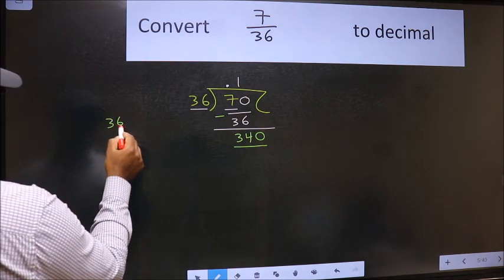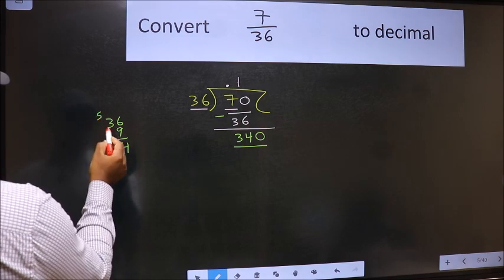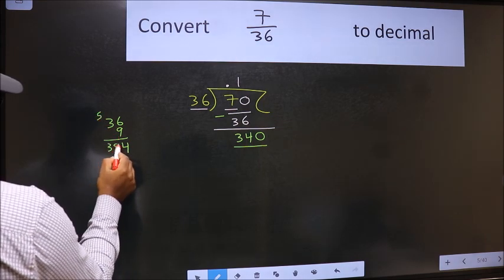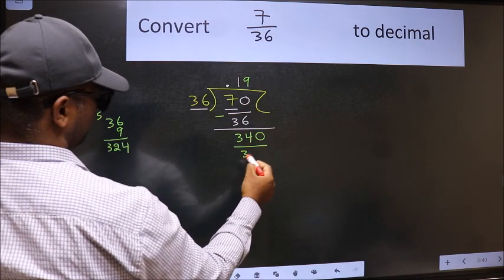we should take 9. 9 times 6, 54. 9 times 3 is 27, 32. So 36 times 9 is 324.